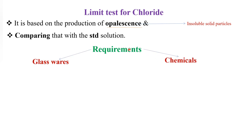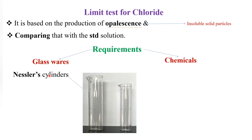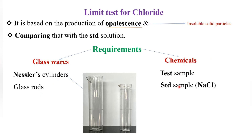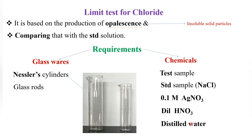Now we will see the requirements for this limit test for chloride. There are two categories: glassware and chemicals. Under glassware, we mainly need Nessler cylinders — a 50 ml Nessler cylinder and a 100 ml Nessler cylinder. We need two Nessler cylinders: one for the standard and one for the sample, plus a glass rod. Under chemicals, we need the test sample, the standard sample which is sodium chloride, 0.1 M silver nitrate, dilute nitric acid, and distilled water.